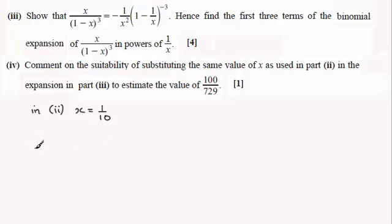So in part three, it's only valid if the term -1/x lies between -1 and 1. If you're unsure about the validity for binomial expansions, do check out my earlier videos on that.